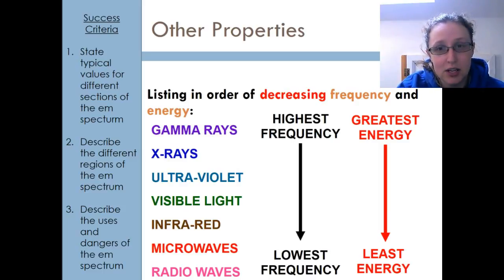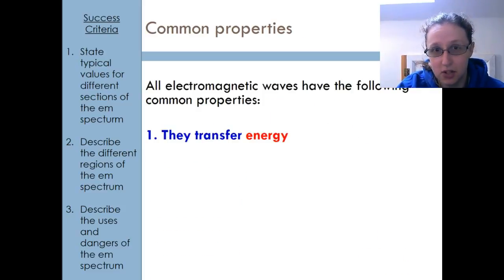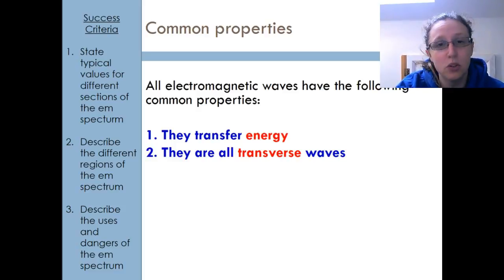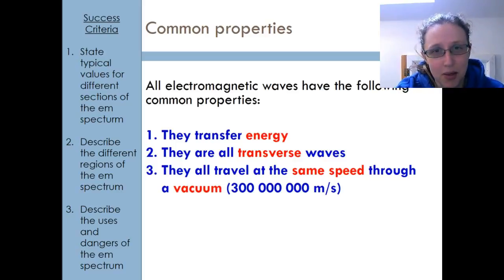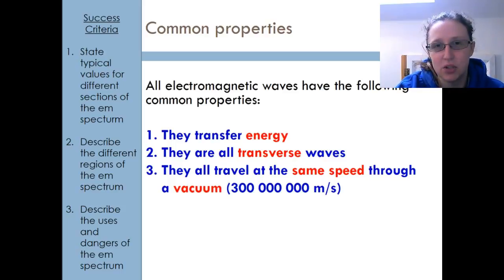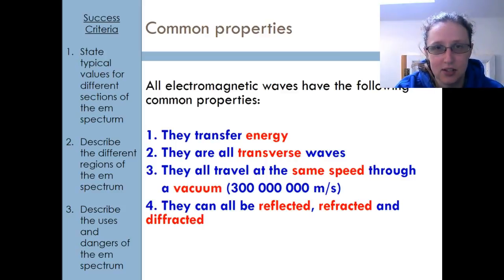You need to know the order and you need to know the properties. There are a few things they all have in common. First, they all transfer energy. Second, they are all transverse waves. Third, they all travel at the speed of light — 3 times 10 to the 8 meters per second — through a vacuum. Fourth, they can all be reflected, refracted, and diffracted, three things we will talk about more later on.